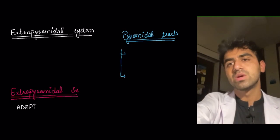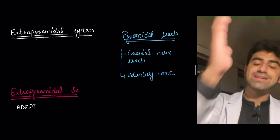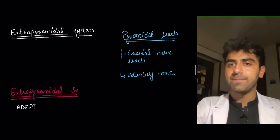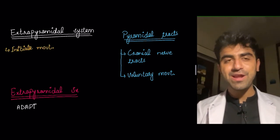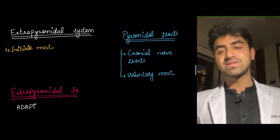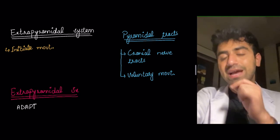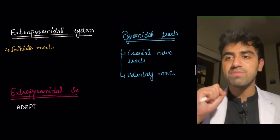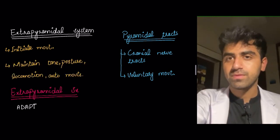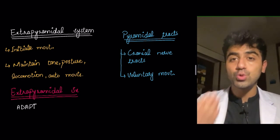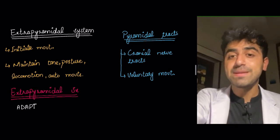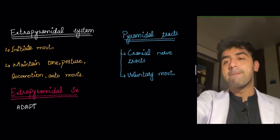Voluntary movement — for example, moving your right hand or right foot — is controlled by the pyramidal tracts, specifically the corticospinal tract. But to sit upright you need to maintain tone and posture in many other muscles like your back muscles. That is controlled by the extrapyramidal system. The extrapyramidal system initiates movement and maintains tone, posture, and the movements that occur automatically in your body.